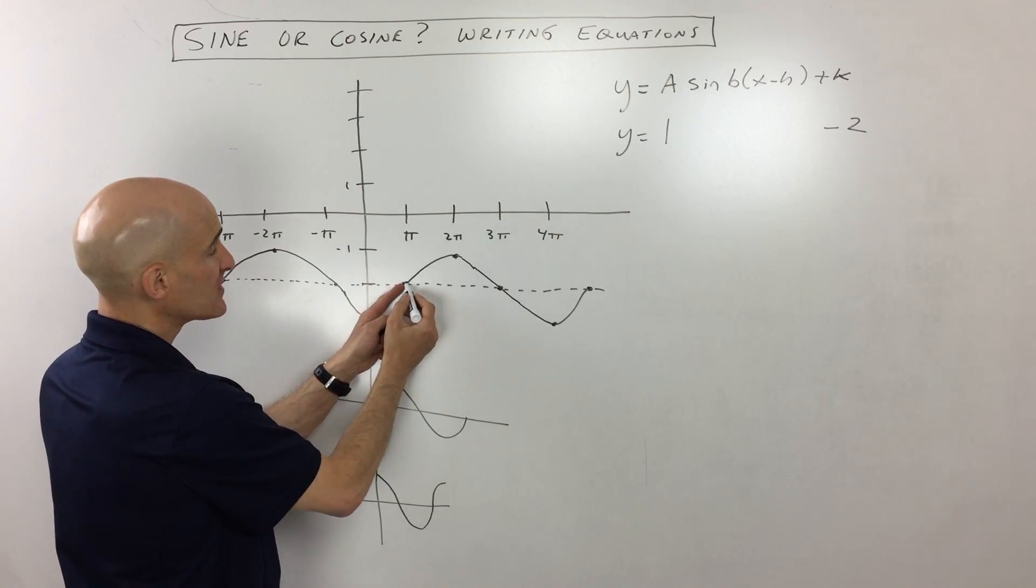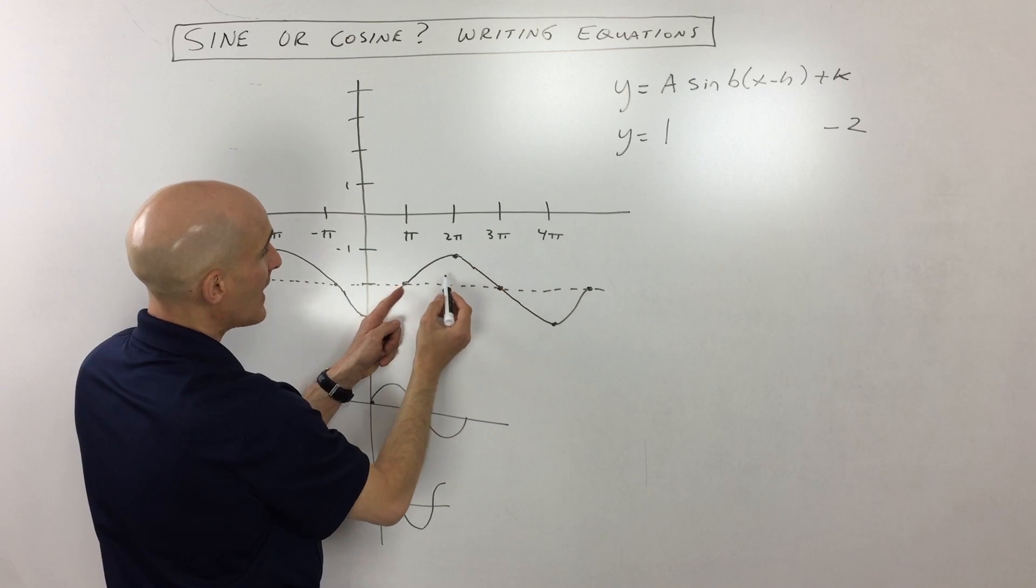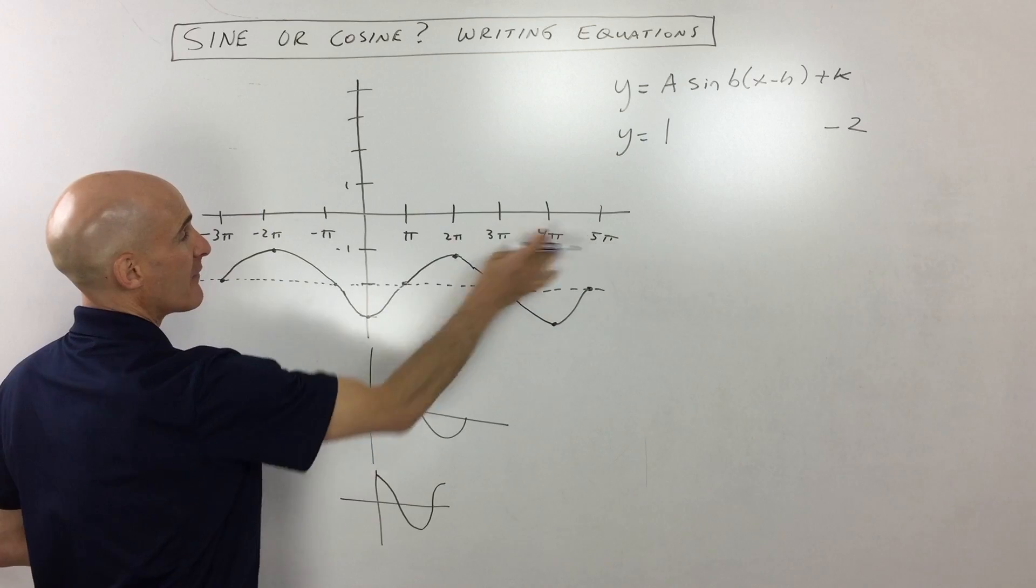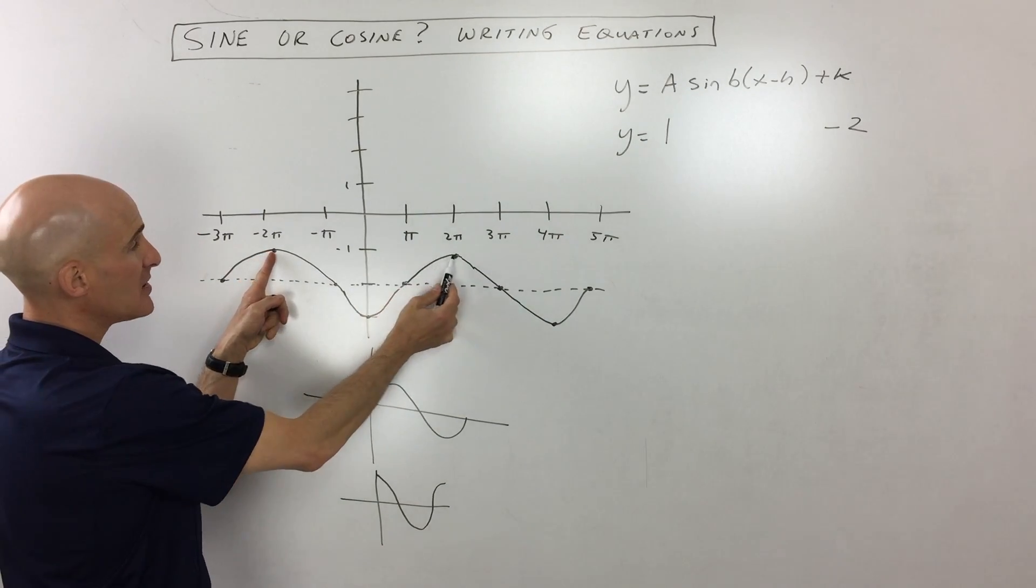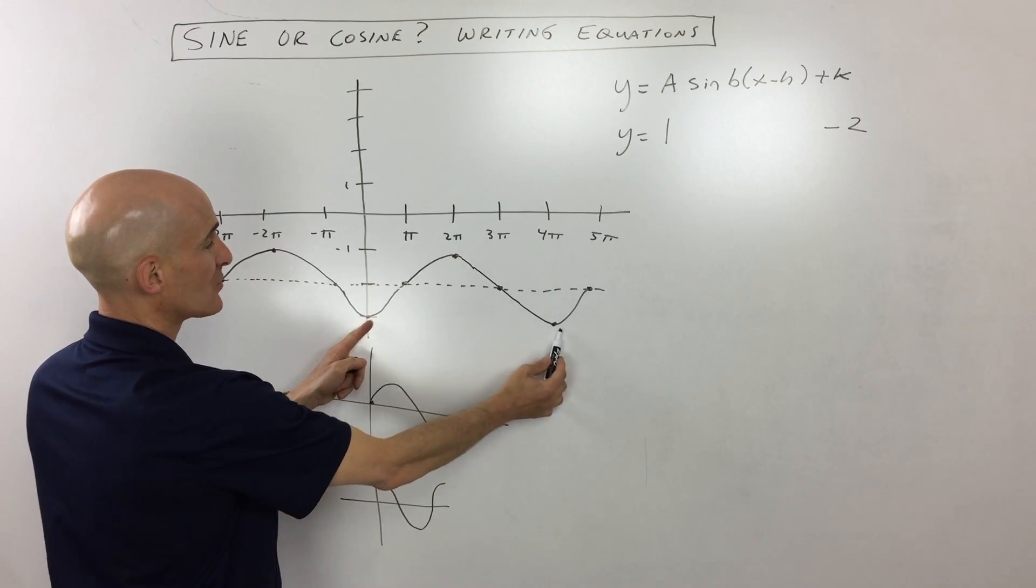And what we want to do is we want to calculate what the period is for this particular graph. Now to get from this point to where it starts over and repeats again, that's giving us a distance of four pi. Five pi minus one pi, four pi until it repeats. The other way to do it is you can measure from peak to peak or from valley to valley.